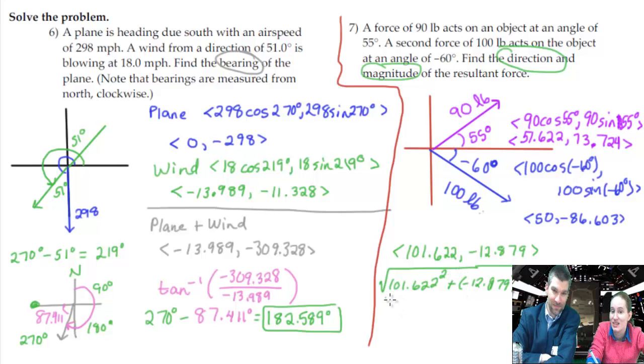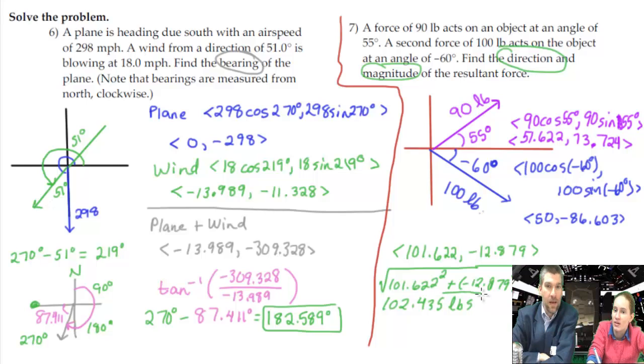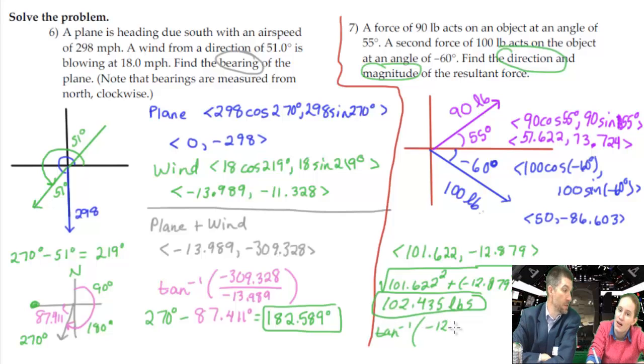We're squaring and adding and then square rooting and we get for the magnitude... 102.435. 102.435. And that's in pounds. Elbs. I like to make my L's curly so they don't look like ones. That's a good plan. That's a very good plan indeed. And then we're just going to arc Tanarooski this guy because you know the two sides.